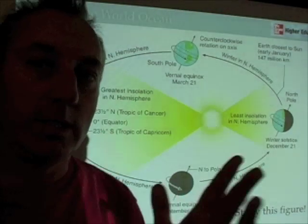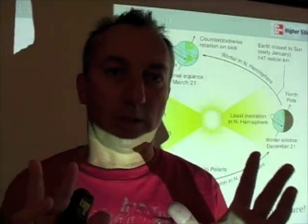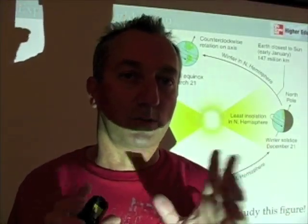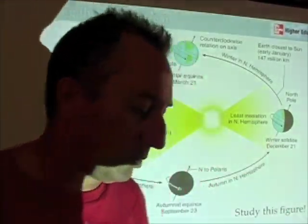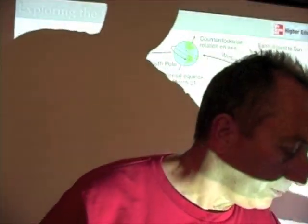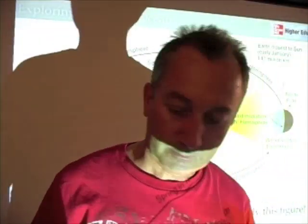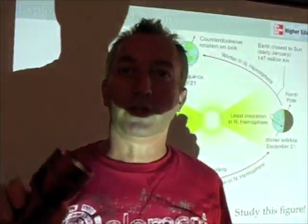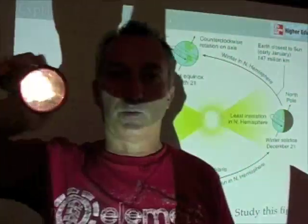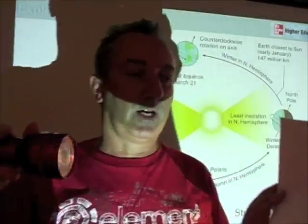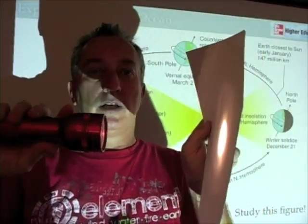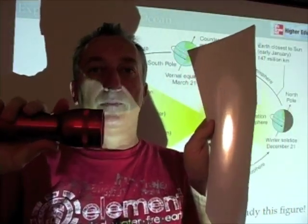It's this tilt of the Earth that causes our seasons, and we'll see why that's true with a simple demonstration. You can do this at home. Take a flashlight — just a regular old flashlight — and shine it on a piece of paper.